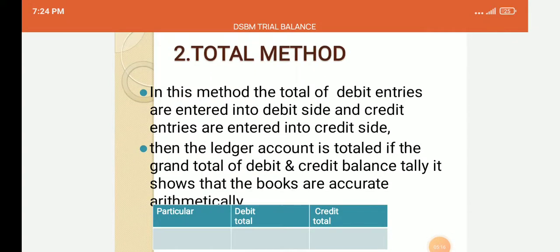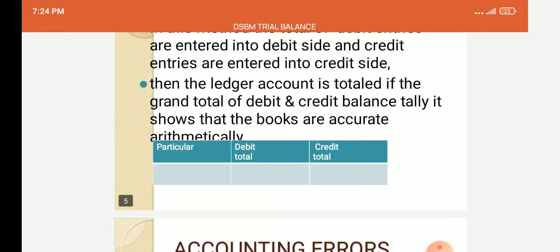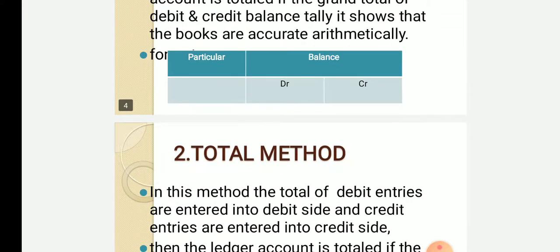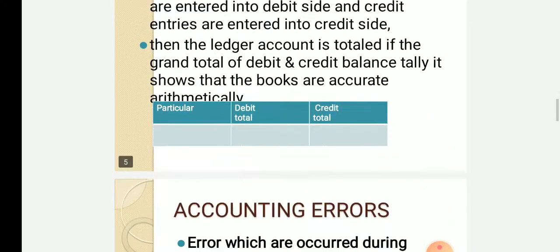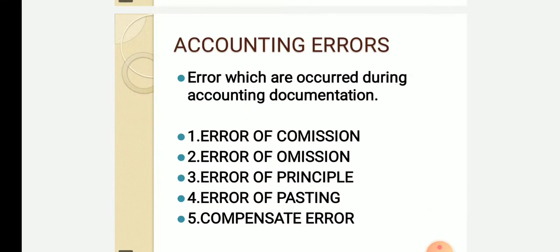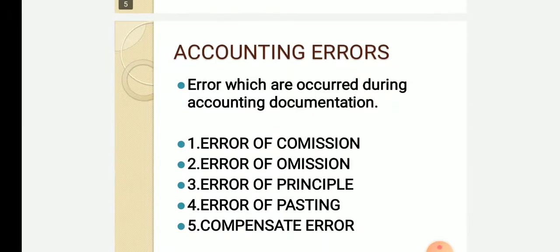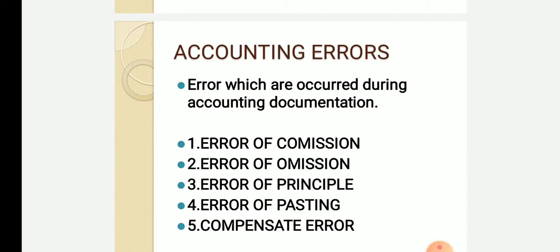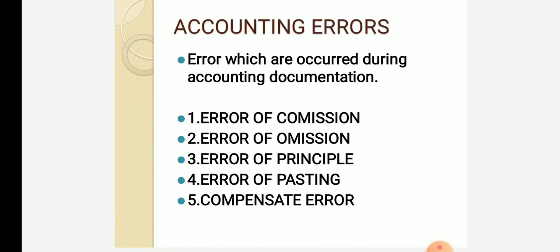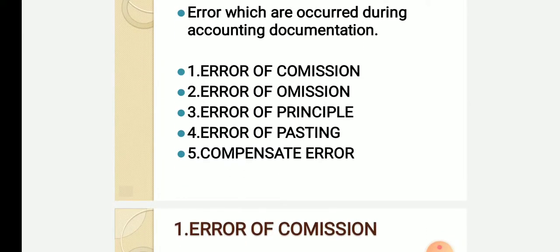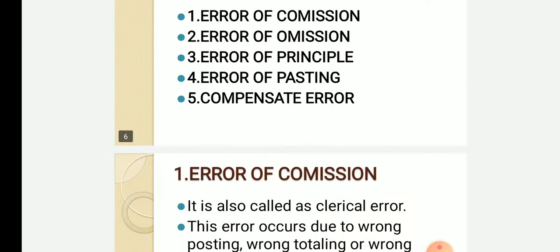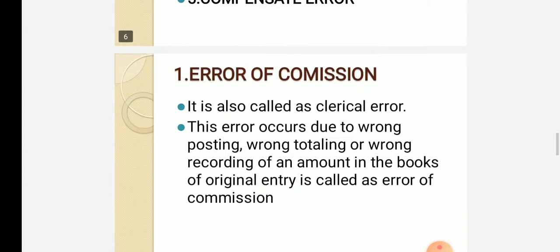There are two methods of trial balance: the balance method and the total method. In both methods, you work with debit and credit entries. If debit and credit totals match under the balance method or total method, the accounts are accurate. Next is accounting errors — error of commission, error of omission, error of principle, error of posting, and compensate error. We will see them one by one.